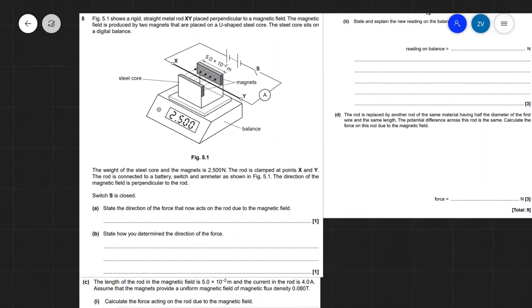So Figure 5.1 shows a rigid straight metal rod xy placed perpendicular to a magnetic field. The magnetic field is produced by two magnets that are placed on a U-shaped steel core and this sits on a digital balance. Normally with these experiments there will be a resultant force downwards which will tend to increase the reading, and we can use that to determine the magnetic force that is acting on the rod.